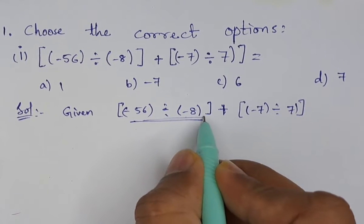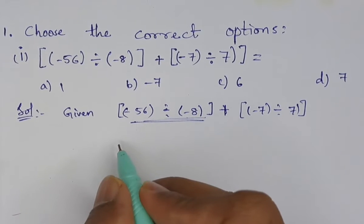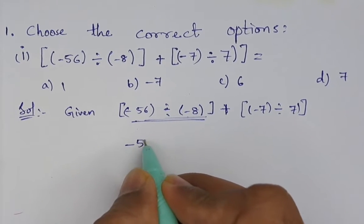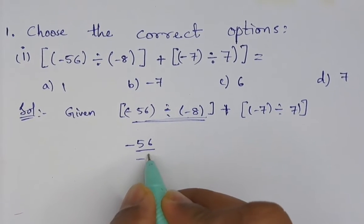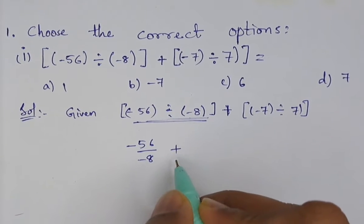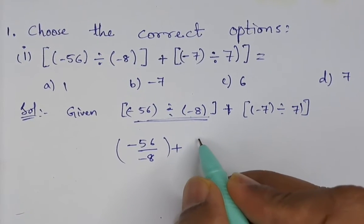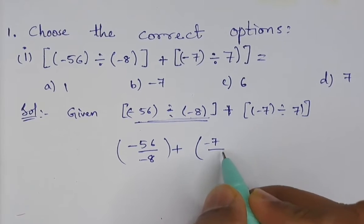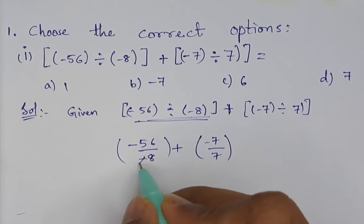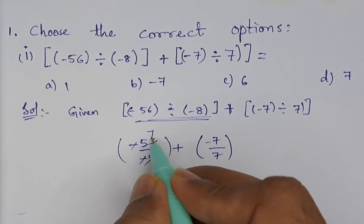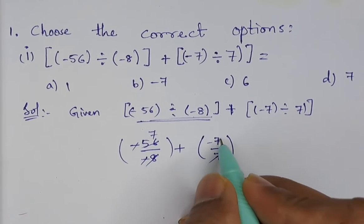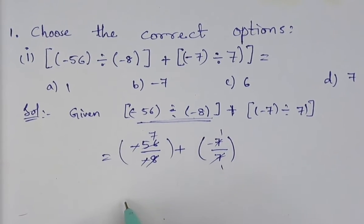We will solve the brackets: -56 divided by -8 plus -7 divided by 7. Negative divided by negative becomes positive. 56 ÷ 8 = 7, and 7 ÷ 7 = 1.